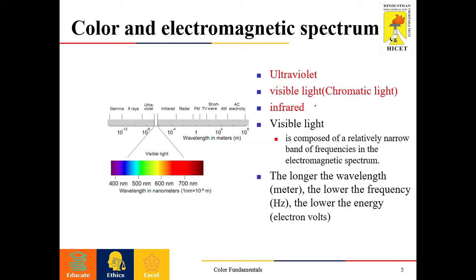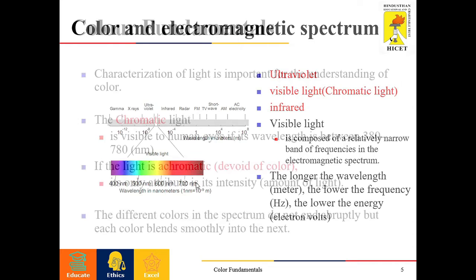That visible light can be called as chromatic light. This visible range of the electromagnetic spectrum is very narrow compared to the entire electromagnetic spectrum. The wavelength and frequency are inversely proportional to each other, and the energy of these colors can be measured in terms of electron volts.